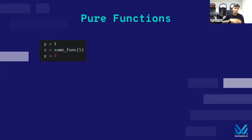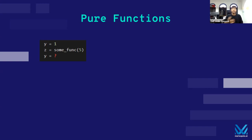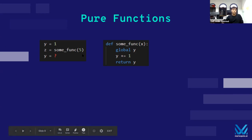So, a pure function. I have this bit of Python code: y equals 1, and then z equals some function with an input parameter of 5. What is y after I call this function? Most of you would say y is 1, which is completely understandable — that's what common sense says. But what if the function looked like this: global y, take that y, add 1, and then return 1. So now z equals 2 and y equals 2, even though y does not even appear in the statement at all.